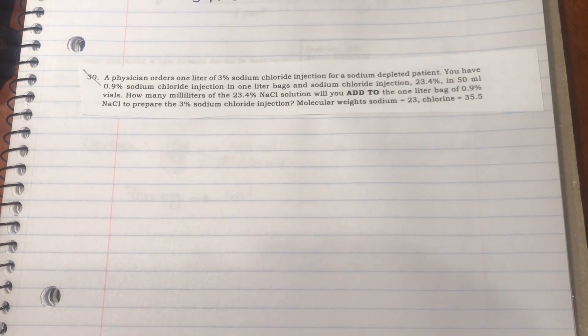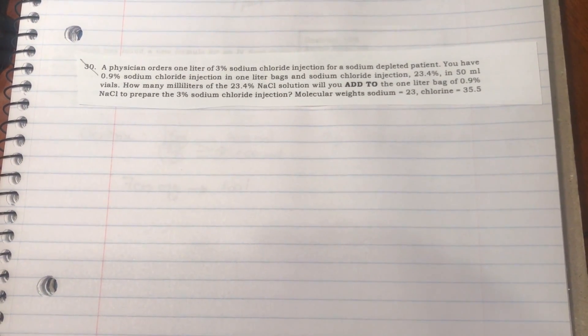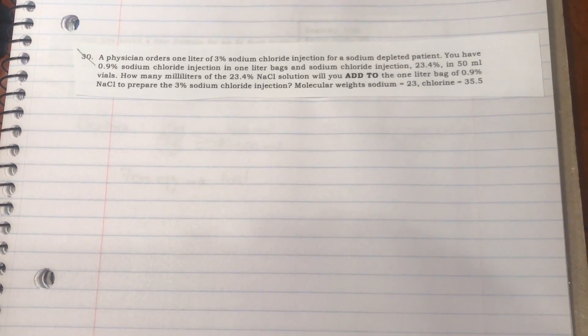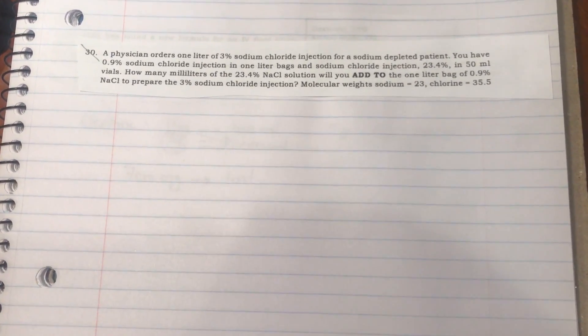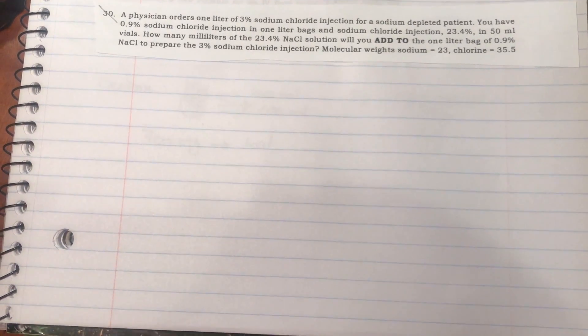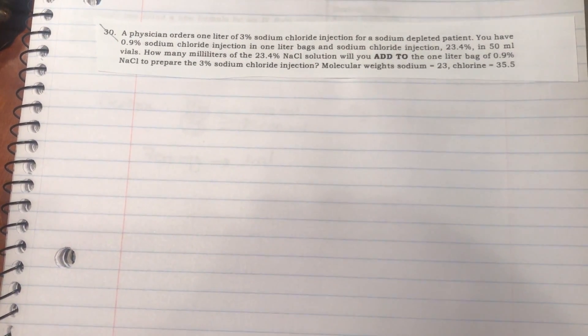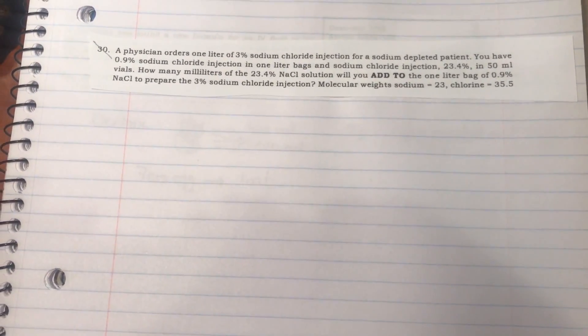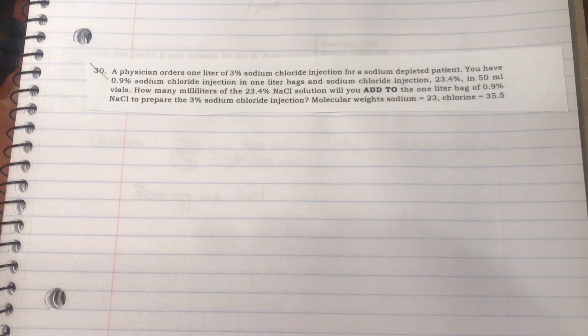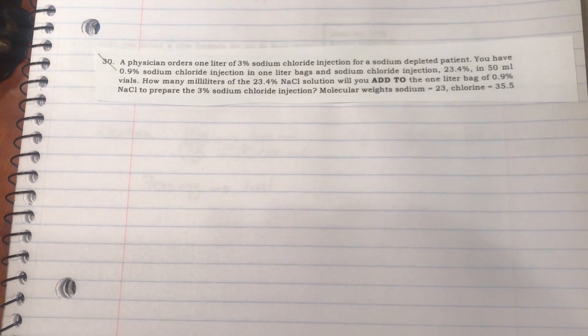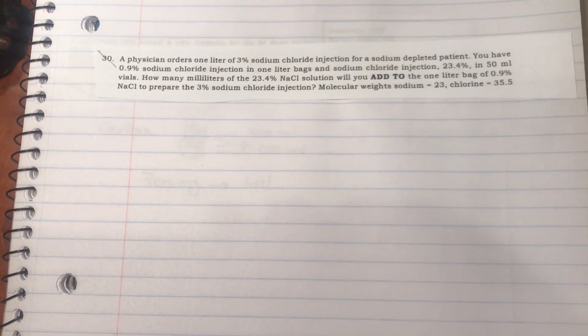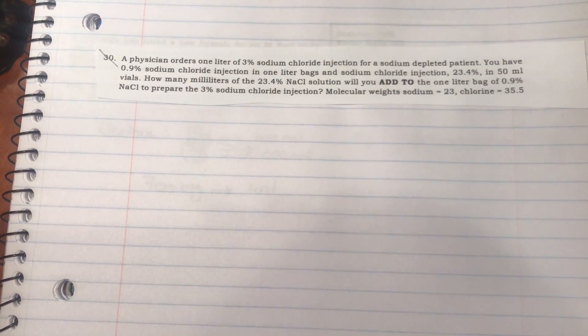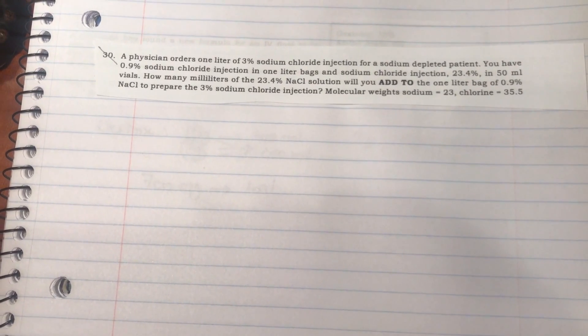You have 0.9% sodium chloride injection, which is essentially normal saline in a one liter bag, and sodium chloride injection 23.4% in 50 mL vials. How many milliliters of the 23.4% solution will you add to the one liter bag of 0.9% normal saline to prepare the 3% sodium chloride injection? They're also giving you the molecular weights of sodium and chlorine.